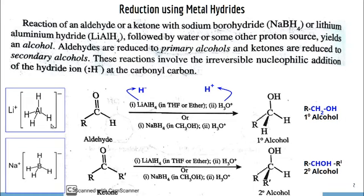Here is the structure of Lithium Aluminium Hydride and Sodium Borohydride. In the case of Lithium Aluminium Hydride, the Aluminium-Hydrogen bond is more polar compared to the Boron-Hydrogen bond. That means there is greater electron density difference between Aluminium and Hydrogen compared to Boron and Hydrogen. So it can provide hydride ion for reduction very easily, making Lithium Aluminium Hydride a stronger reducing agent compared to Sodium Borohydride.